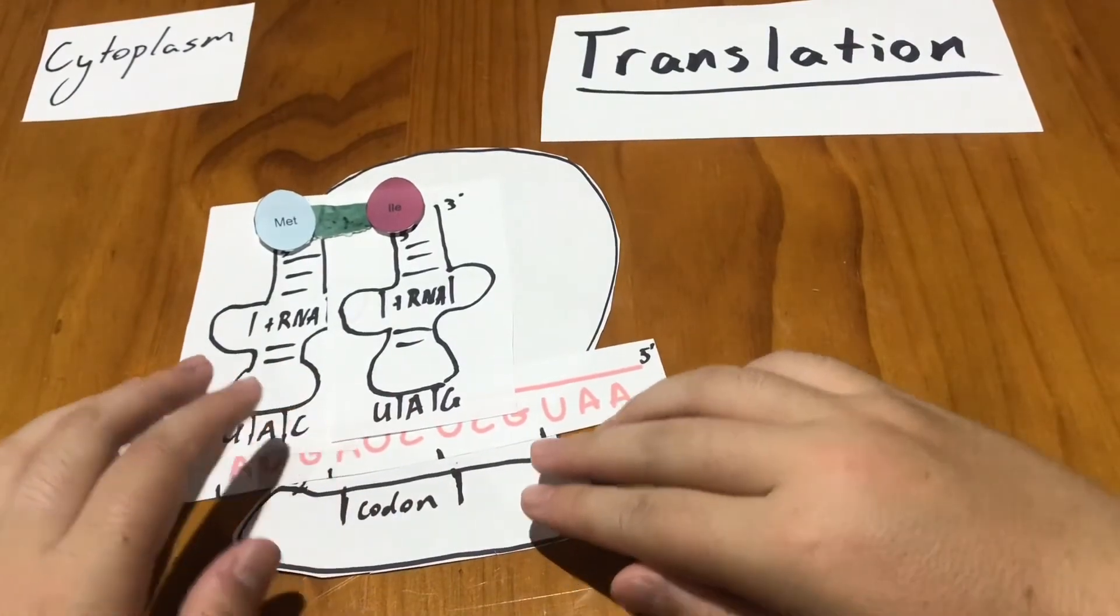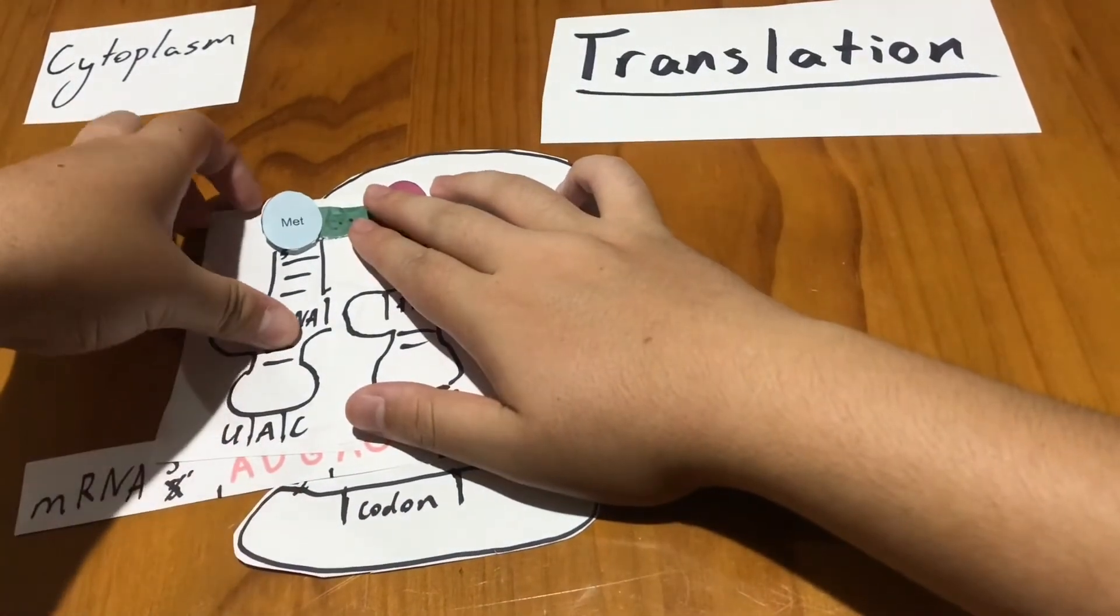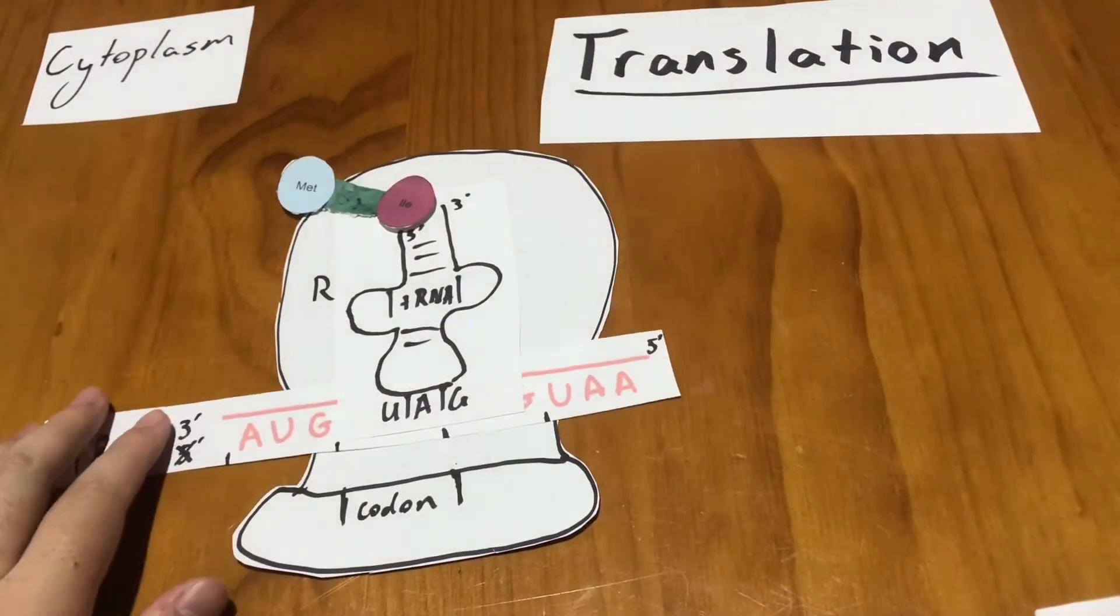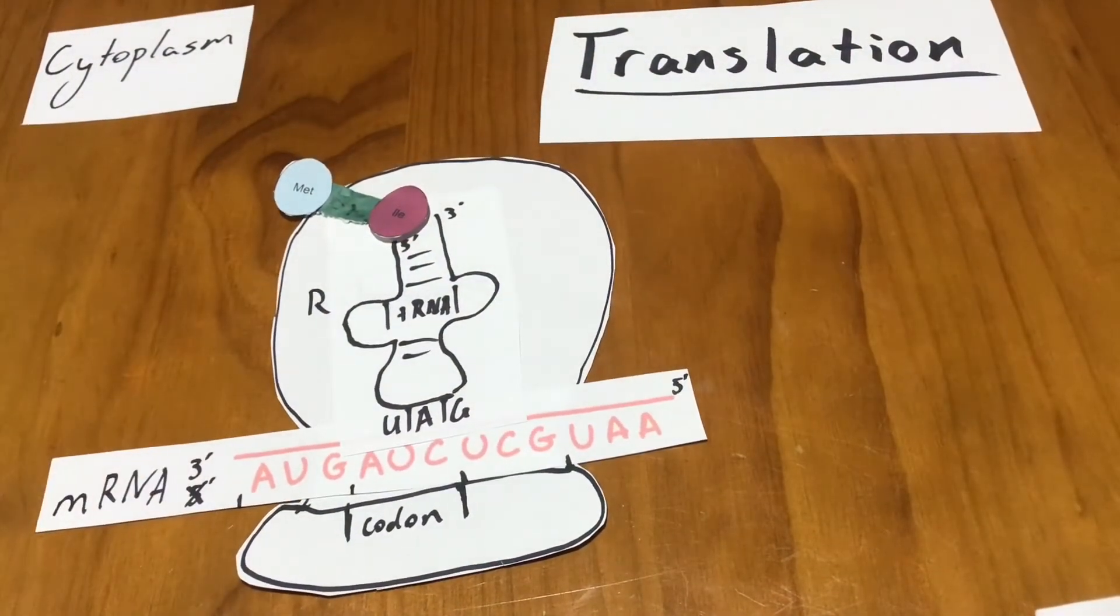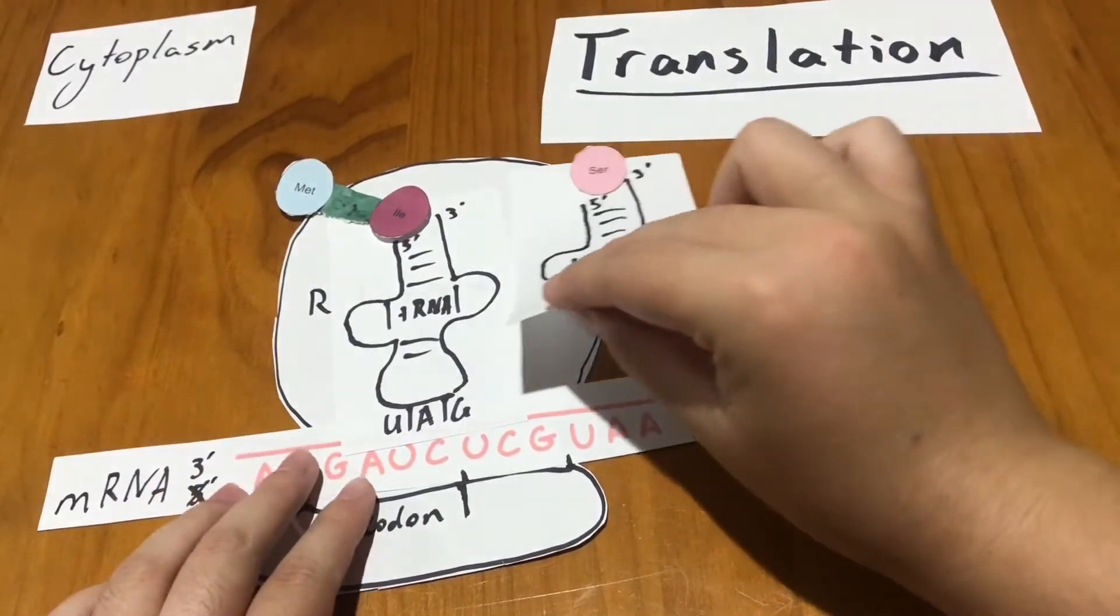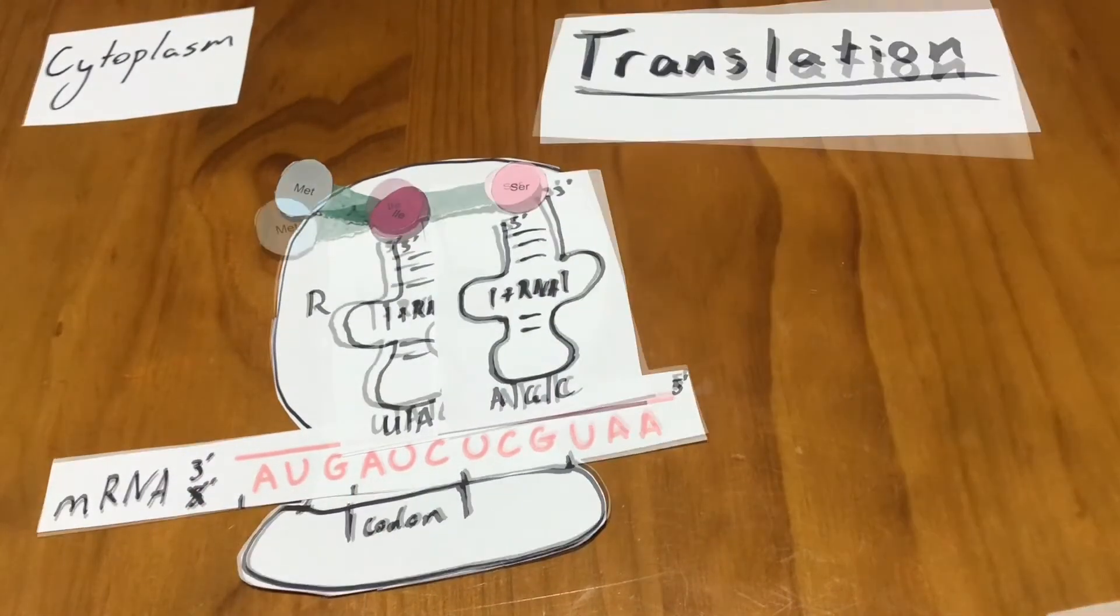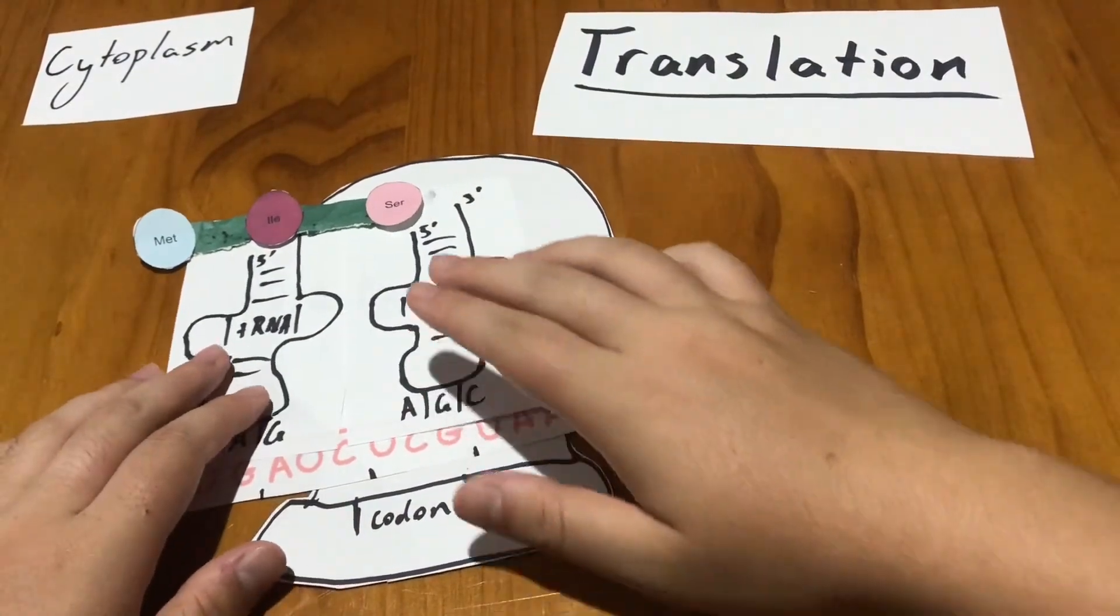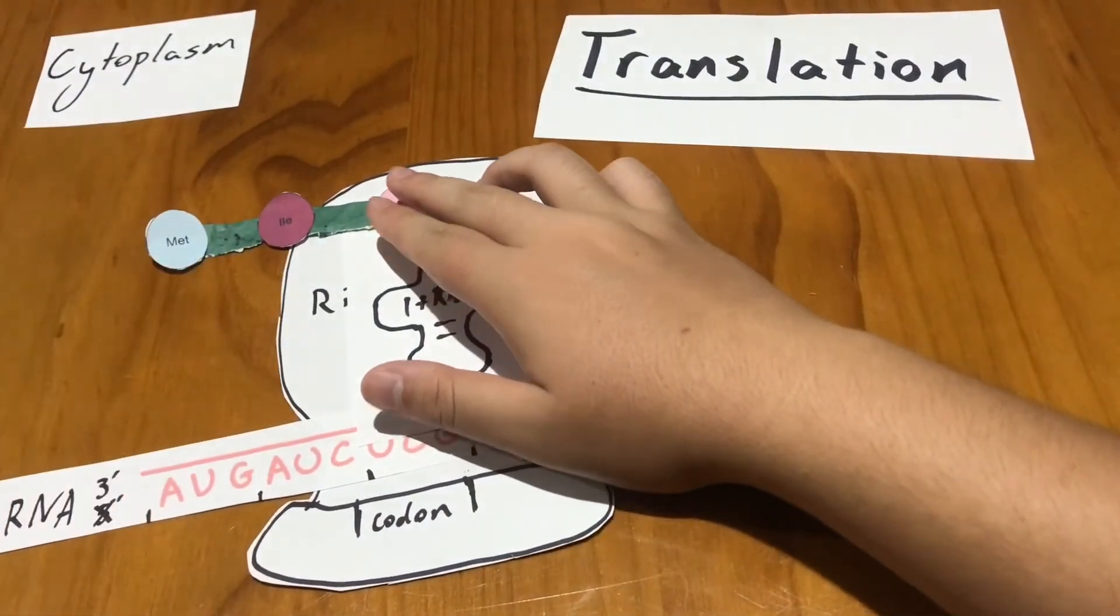With the first tRNA, an amino acid is attached, then the next tRNA carrying another amino acid will move in and attach its anticodon to the mRNA's complementary codon. The two amino acids carried by the tRNA will link together forming a peptide bond. Then the first tRNA and its anticodon will detach, leaving behind the amino acid where it will be recycled.